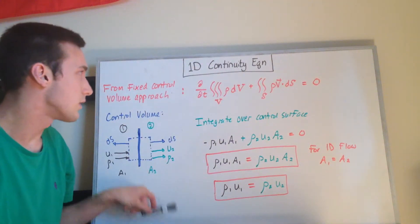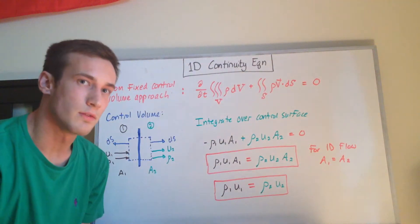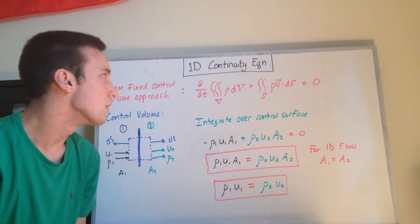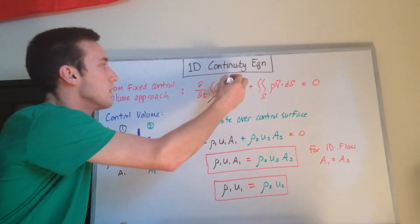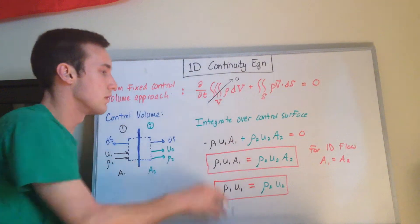So we're going to be dealing with steady flow. So this is the steady flow equation for 1D flow. So the d/dt will go to zero.